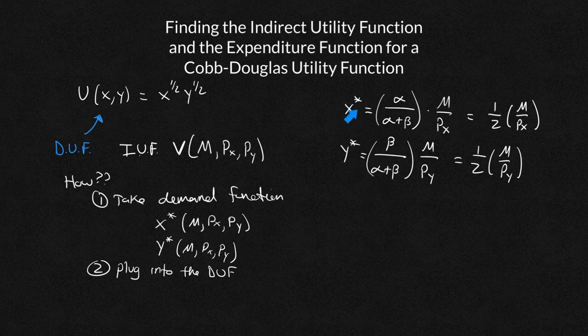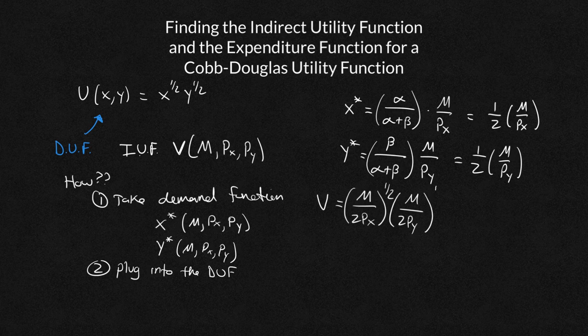So we have these demand functions, and we're just going to plug it into my direct utility function. Now that we do this, we just name it V for my indirect utility function. So x is M over 2Px raised to the 1 half. And y is M over 2Py raised to the 1 half. So all I'm doing there is I'm taking this. If it's 1 half times M over Px, that's just M over 2Px. And I'm substituting it in. I'm plugging it in for this x. So it's that whole thing raised to the 1 half. I do the same thing with y. That's raised to the 1 half. And now I need to do a little bit of algebra.